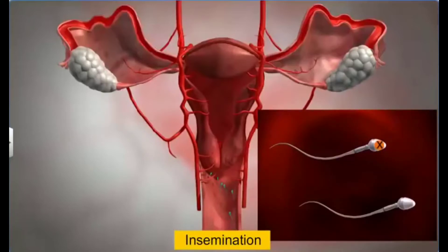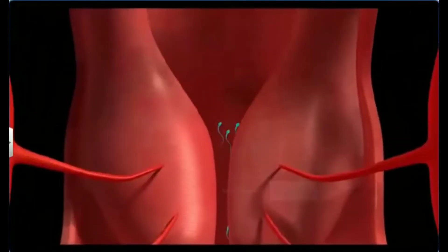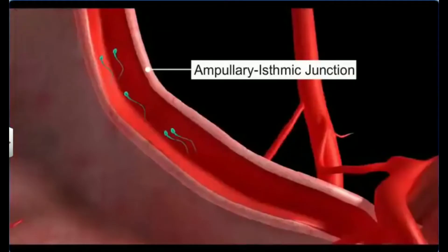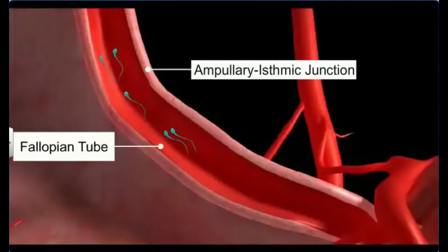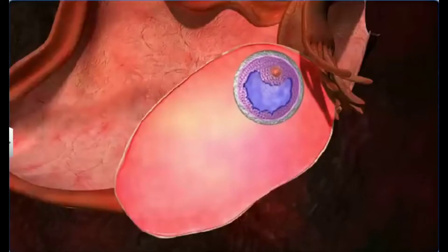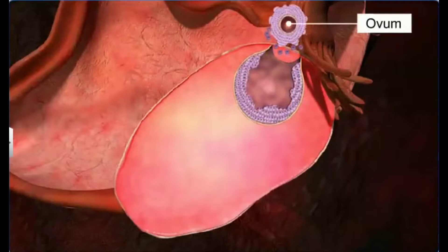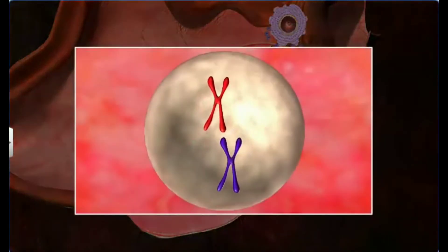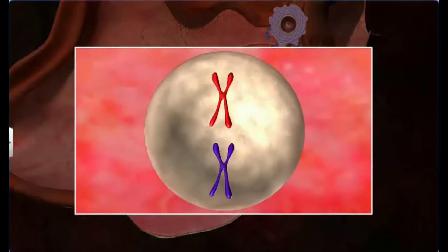This is achieved by insemination, where the penis releases semen with thousands of sperms into the vagina. Interestingly, while half of the sperms carry the X chromosome, the other half contain the Y chromosome. These sperms rapidly move through the cervix and finally reach the ampullary-isthmic junction of the fallopian tube. Meanwhile, the ovum, after completing the first meiotic division, gets released into the fallopian tube with the rupture of the Graafian follicle.